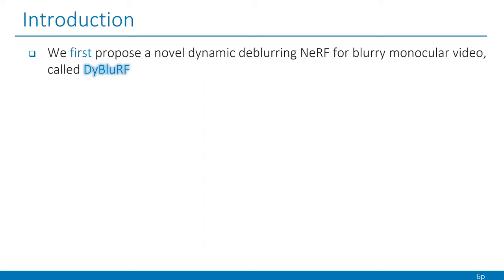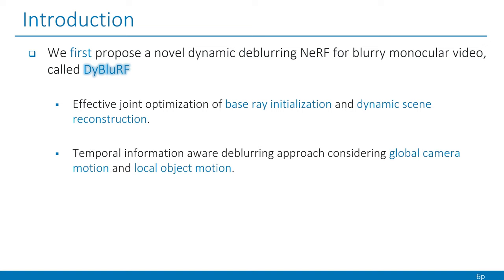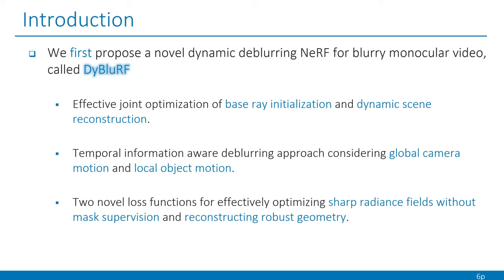To address these challenges, we first propose a novel dynamic de-blurring NeRF for blurry monocular video, called DyBluRF, which utilizes an effective joint optimization of base ray initialization and dynamic scene reconstruction. In addition, it has a temporal information-aware de-blurring approach considering global camera motion and local object motion. We also propose two novel loss functions for effectively optimizing sharp radiance fields without any mask supervision and reconstructing robust geometry, respectively.